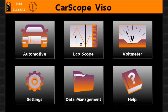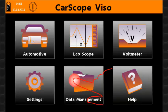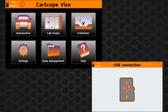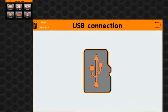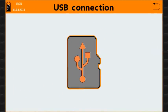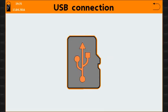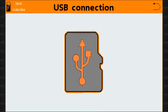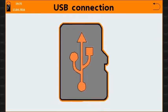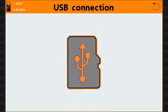The data management function icon opens the USB 2.0 device port for direct PC connection. This mode allows you to transfer files between CarScope Viso and a computer using a USB cable.